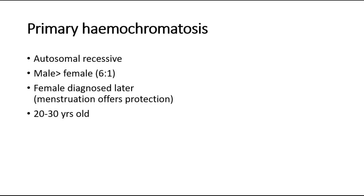For primary haemochromatosis, it is also known as hereditary haemochromatosis. The inheritance pattern is autosomal recessive. Males are more commonly affected than females, where the ratio is very significant at 6 to 1. In females, it is diagnosed later because menstruation has been shown to offer protection towards this disease.